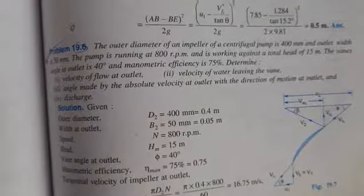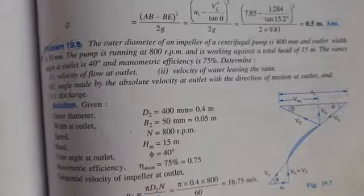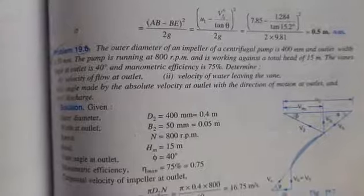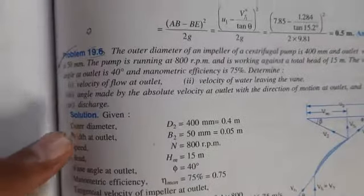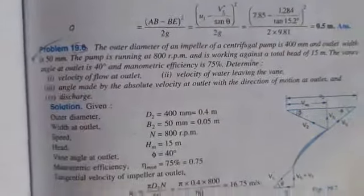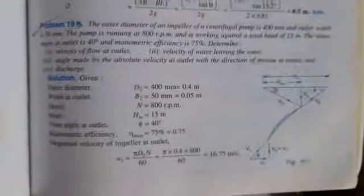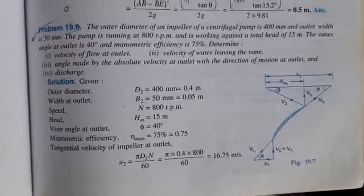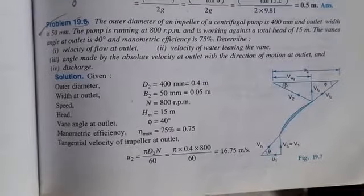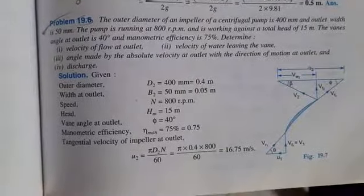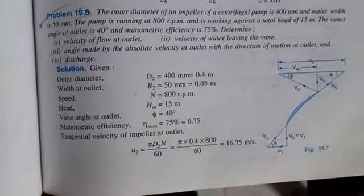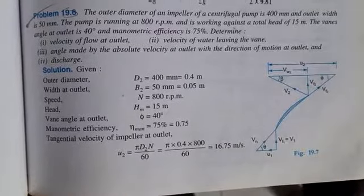The outer diameter of an impeller of a centrifugal pump is 400 mm and outlet width is 50 mm. The pump is running at 800 rpm and is working against a total height of 15 meters. The vane angle at outlet is 40 degree and the manometric efficiency is 75%. Determine: 1. Velocity of flow at outlet.